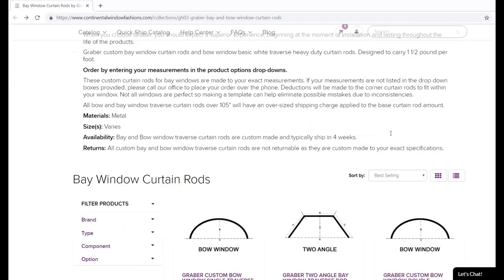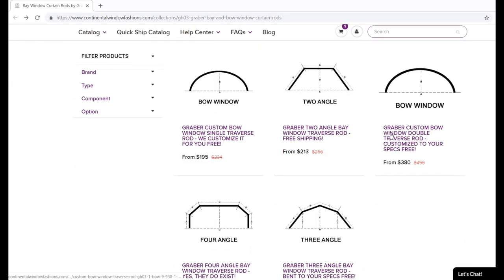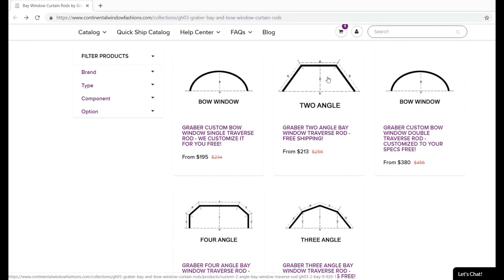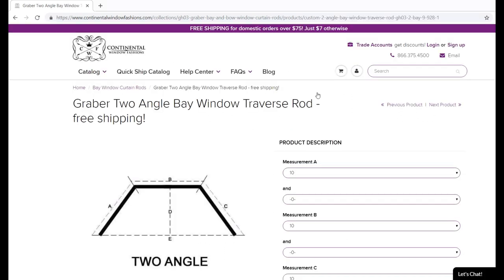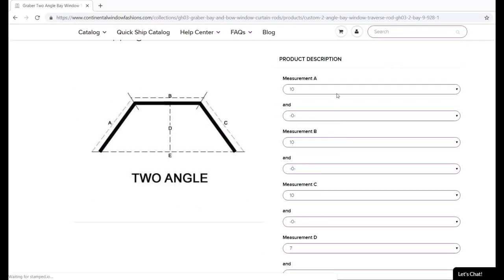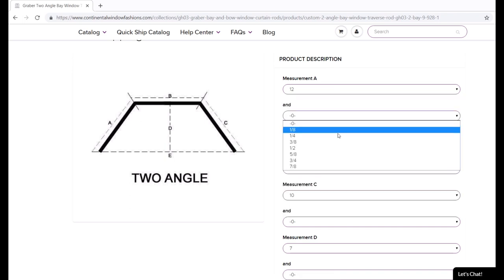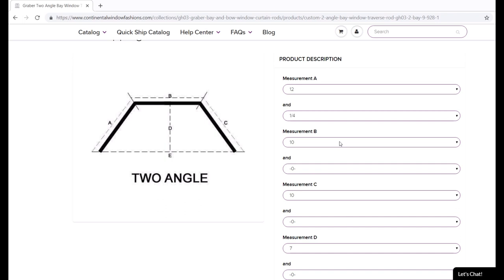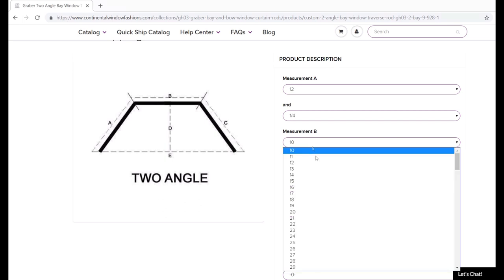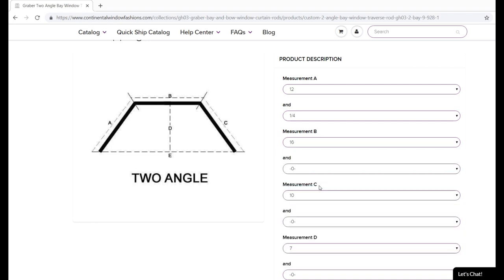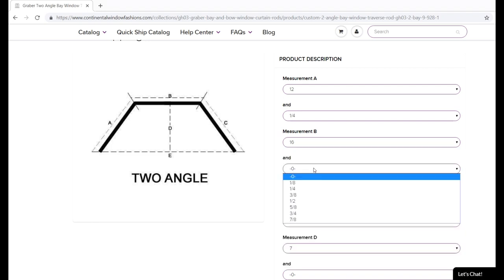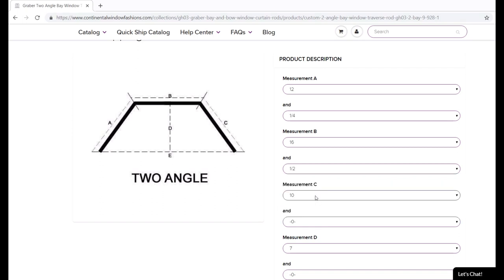Once you have all of your measurements jotted down on the worksheet, you can input the values on the Graeber Bay and Bow Window Curtain Rods page. All of our high-quality steel traverse rods come in a durable white enamel finish. These super heavy-duty rods are manufactured to your specifications to fit your windows perfectly. All measurements are in inches, so simply use the drop-down menu to indicate the measurements you took in the previous step. Use the diagram on the left to guide you.